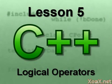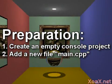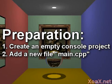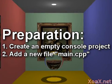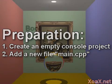Lesson 5: Logical Operators. To follow along with this lesson, you will need to create a new console project and add a new file named main.cpp to it, as we did in Lesson 1. We have already introduced the bool type variable, which can take on logical values true and false.